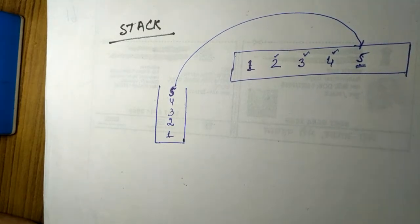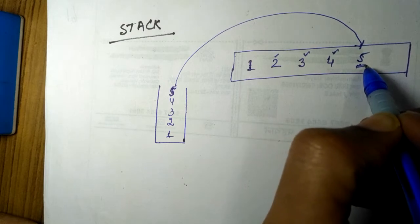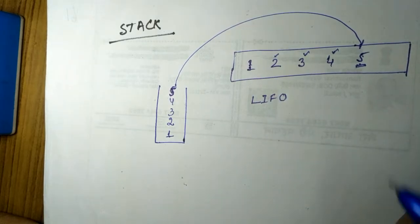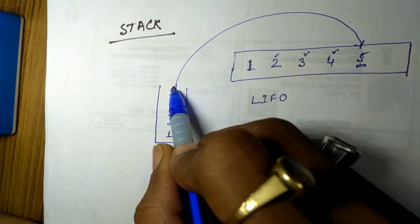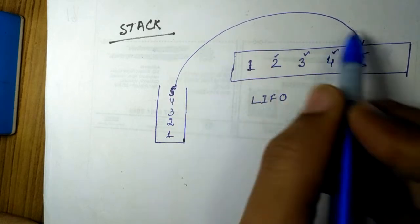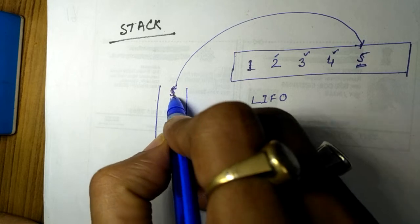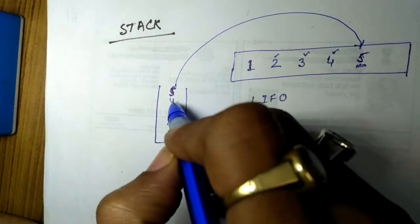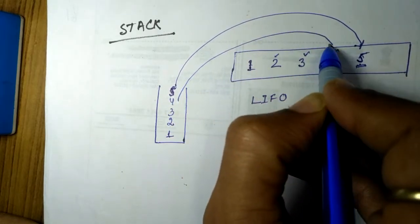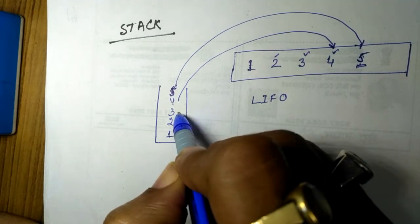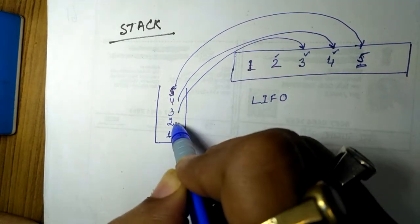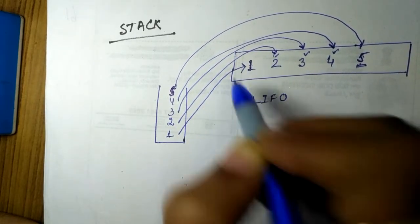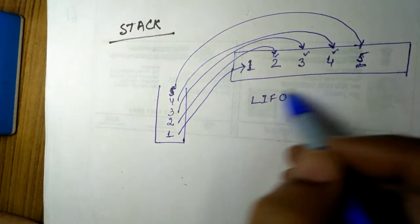You can see that the last book which was taken by the teacher was of student number five, and the same is returned back to the student first. That means the operation performed here is last in first out — the teacher took the notebook of the last student and returned it back first. Similarly, the next answer book returned is of student number four, then student number three, then student number two, and finally student number one gets his answer book.